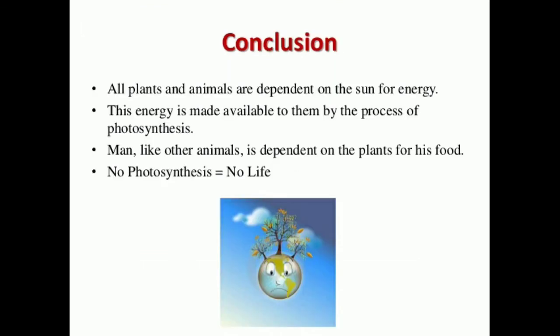At last, we can conclude that all plants and animals are dependent on the sun for energy, and this energy is made available to them by the process of photosynthesis. Humans, like other animals, are dependent on plants for food. No photosynthesis means no life. Dear students, I hope everything is clear. If you have any doubts, you can write in the comment section. Thank you for watching the video, and see you soon in my next video.